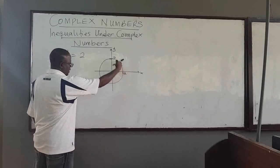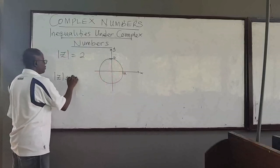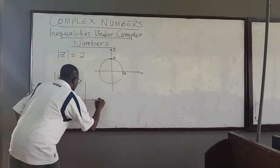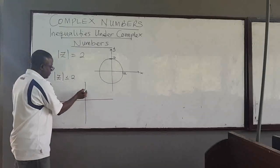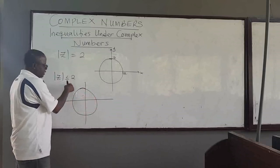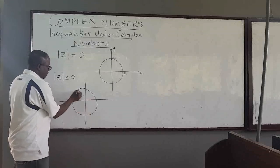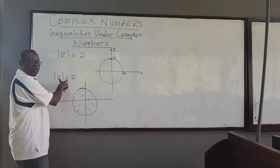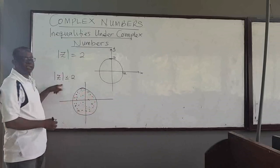All that means is that we are on this circle. Now, if I have |z| less than or equal to 2, then what that means on the Argand diagram is: if you consider equality, it means I am on a circle of radius 2, but less than 2 means everything inside the circle. So this is the region inside this circle, including the boundary because of the equality. The boundary point is represented by that.